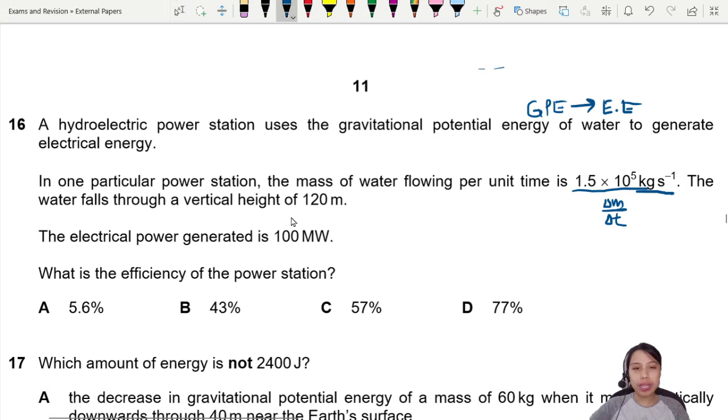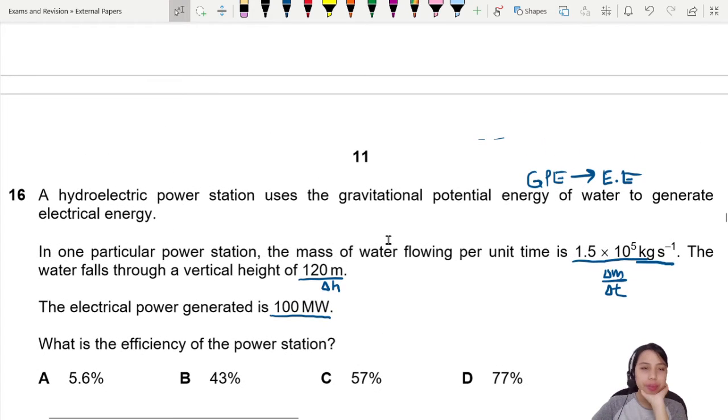The water falls through a vertical height of 120 meters. So this is some kind of change in height. Electrical power generated is 100 megawatt. What is the efficiency of the power station? Imagine this. Your water is flowing at a very high place. Next, suddenly it will come down.